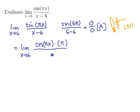Replace the denominator by the derivative of the denominator, or 1. This gives us the limit as x tends to 6 of pi times the cosine of pi x.